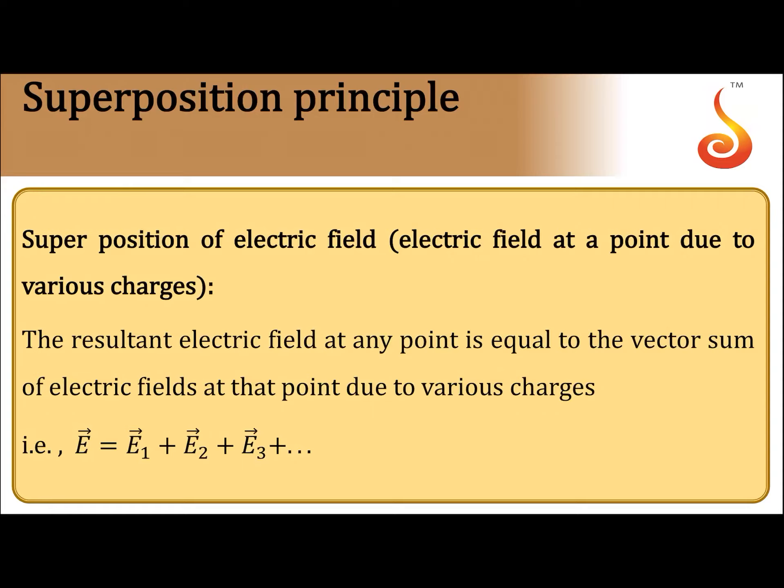Superposition principle for electric field. If there are a number of charges exerting field at a point or producing field at a point, then the resultant electric field at any point is equal to the vector sum of the individual electric fields at that particular point due to various charges.